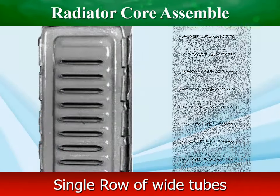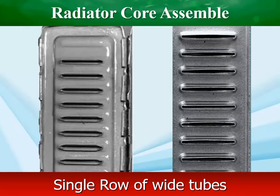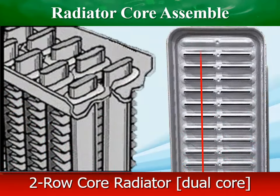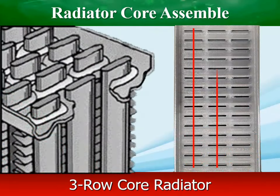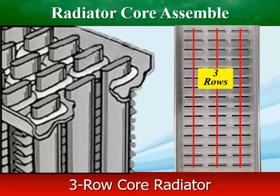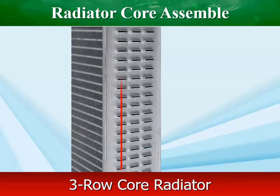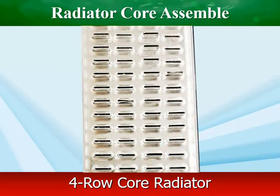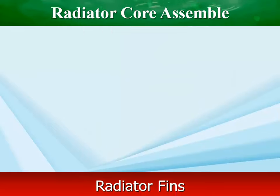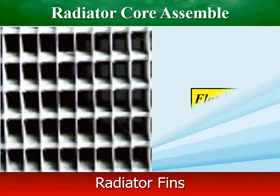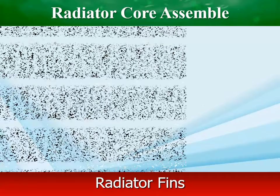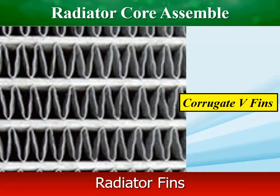Adding tubes is one way to increase surface area. Some radiators use a single row of wide tubes, but double, triple, and four-row models are also used. Car radiator fins are thin metallic components that increase the radiator's surface area, allowing air to pass through. They have excellent thermal conductivity and are generally made from aluminum or copper.